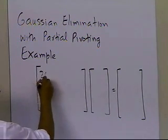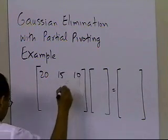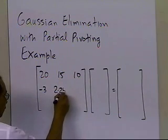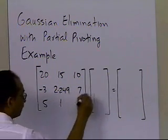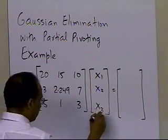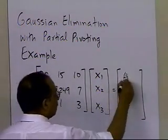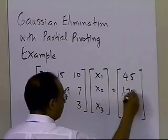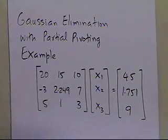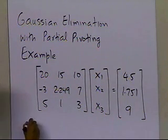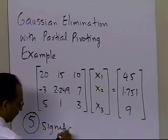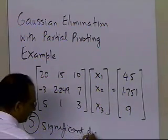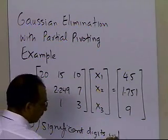So we're given the matrix: the coefficient matrix has entries 20, 15, 10; then -3, 2.249, 7; then 5, 1, 3. The unknowns are x1, x2, x3, and the right-hand side values are 45, 1.751, and 9. The caveat here is that we are only supposed to work with five significant digits with chopping.